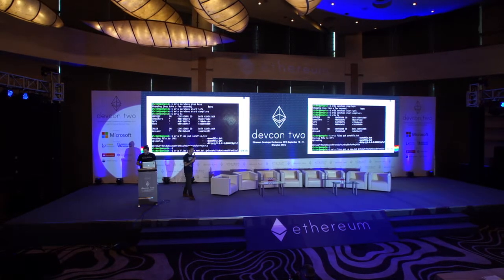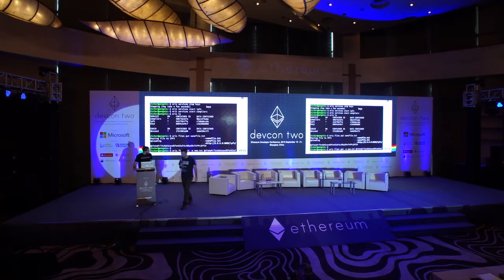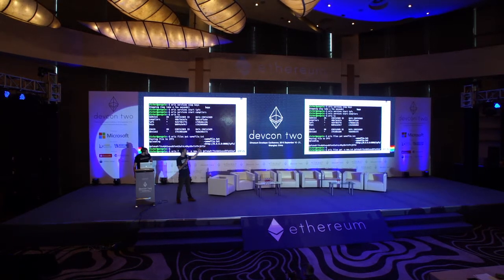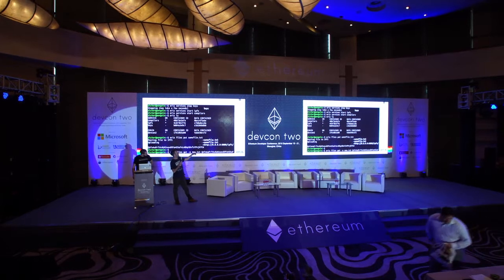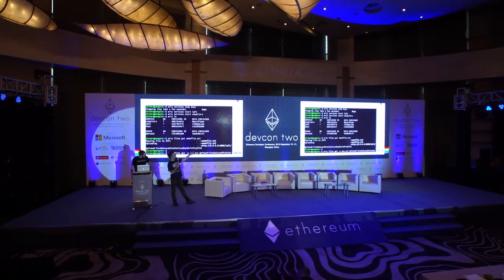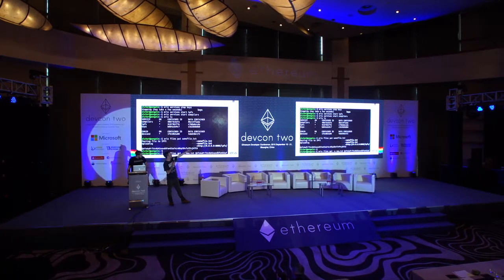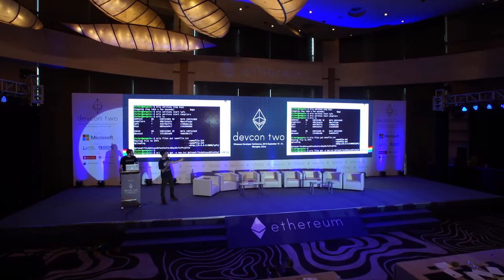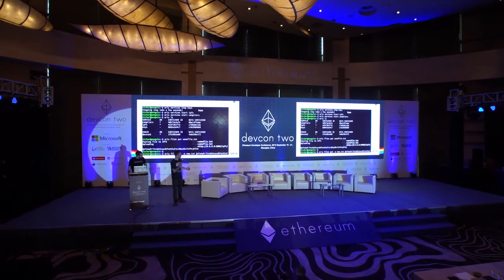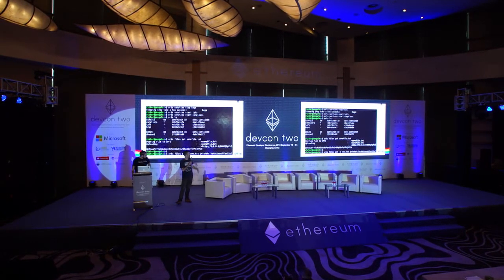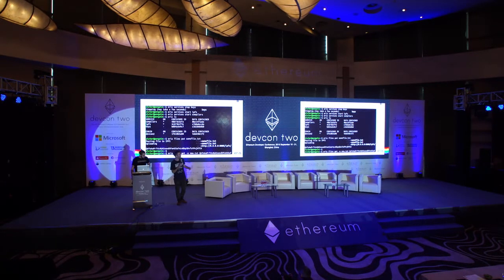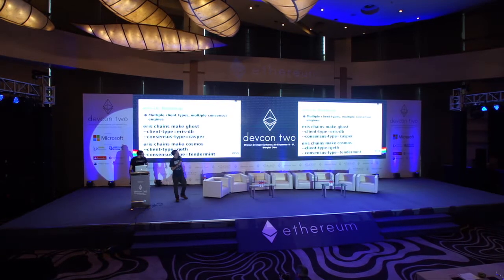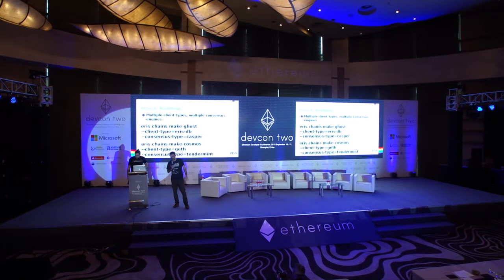Here's a bit about how we think services and a blockchain application platform should look. I stopped keys, which was started earlier by the chain maker, started IPFS and the compiler service. When I run `aris ls`, you can see keys is not running — it has a dash — and compilers and IPFS are running, along with the chain. With IPFS running, we can do something simple like `aris files put` on a random file, which spits out a hash. You can then retrieve it with `aris files get` and share it with colleagues.